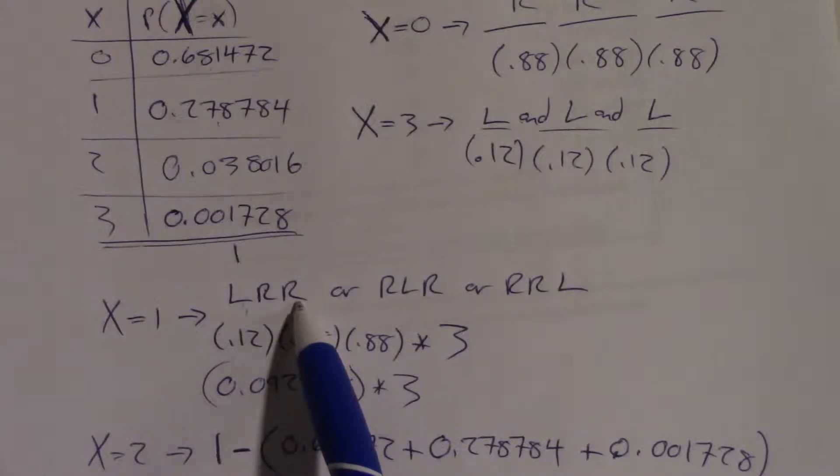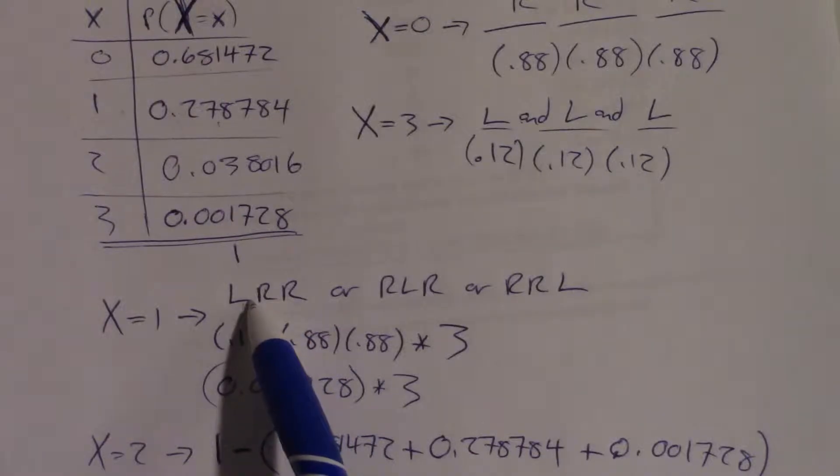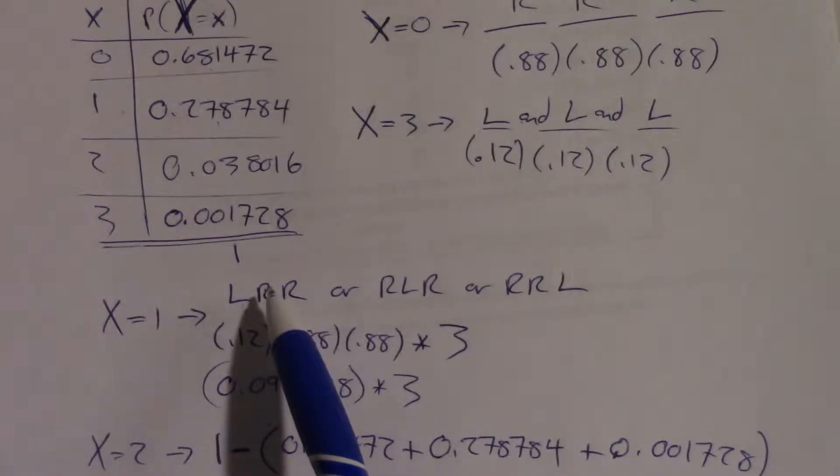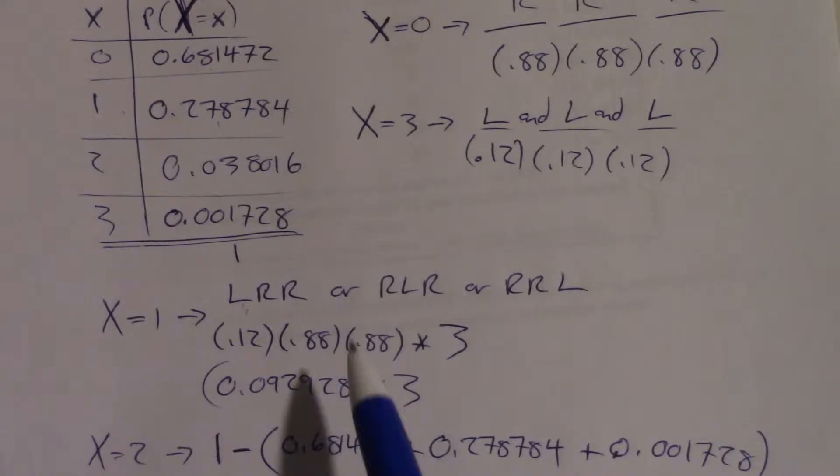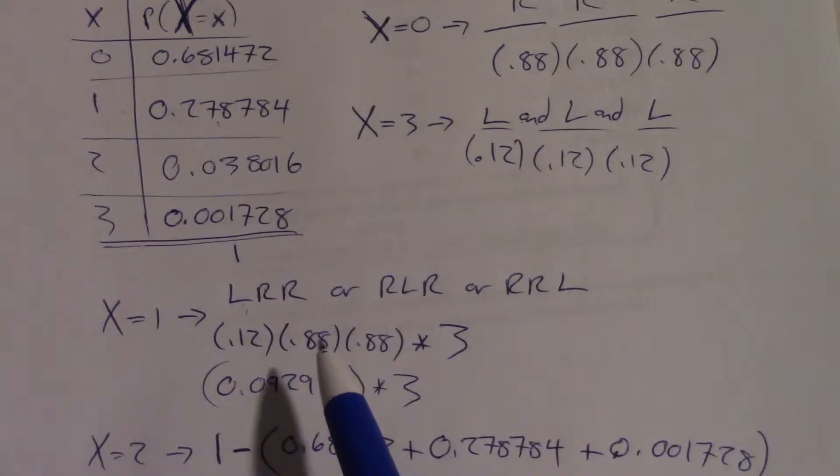And then the third one is saying, what's the probability that you get a right handed person given the first was left and the second was right? Well, again, the people are independent, so we don't care. The conditional probabilities go away. So all of the rules are still built in here. We're just not explicitly using them.